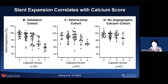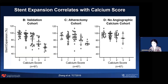We developed this score in a test cohort and validated it in a separate validation cohort. A high calcium score predicts poor expansion. But if you perform atherectomy, even high-score lesions achieve good stent expansion. We also looked at non-angiographic calcium cases where IVUS showed calcium arc more than 270 degrees. None of them had a score of 4, and even with high scores they achieved good expansion—because this indicates superficial calcium, which is why it couldn't be seen by angiography. It's important to assess both circumferential extent and length, and angiographic appearance also matters.